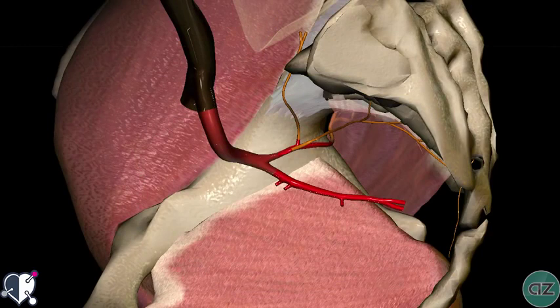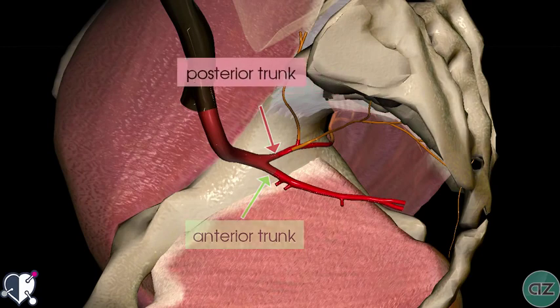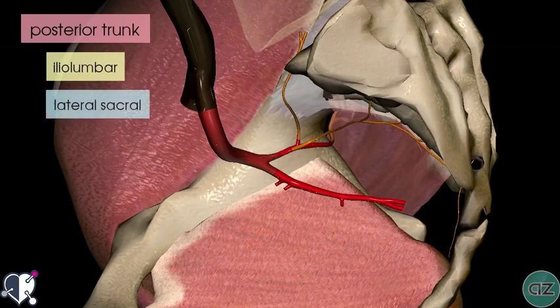Zooming in closer, you can see the two trunks. One extends posteriorly and is known as the posterior trunk, and the other is the anterior trunk. The posterior trunk has three branches: the iliolumbar artery, the lateral sacral arteries, and the superior gluteal artery.